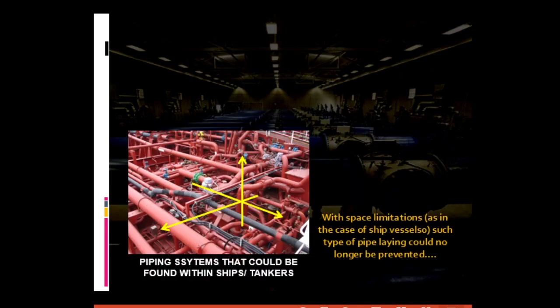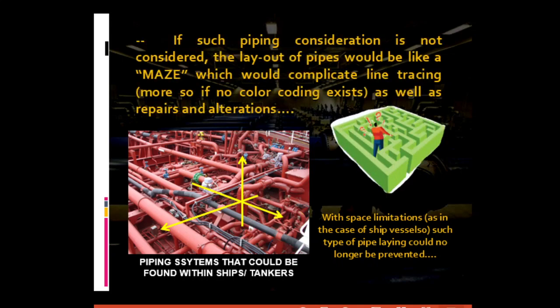Looking at the picture on our slide, we can see piping systems found within ships or tankers. With limitations in space, such type of pipe laying cannot always be prevented. If this piping consideration is not followed, the layout of pipes would be maze-like, which would complicate line tracing — more so if no color coding exists — as well as repairs and possible alterations.